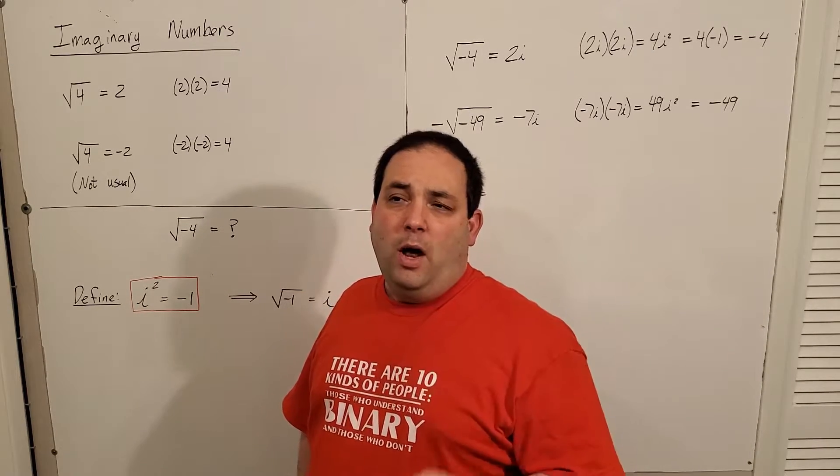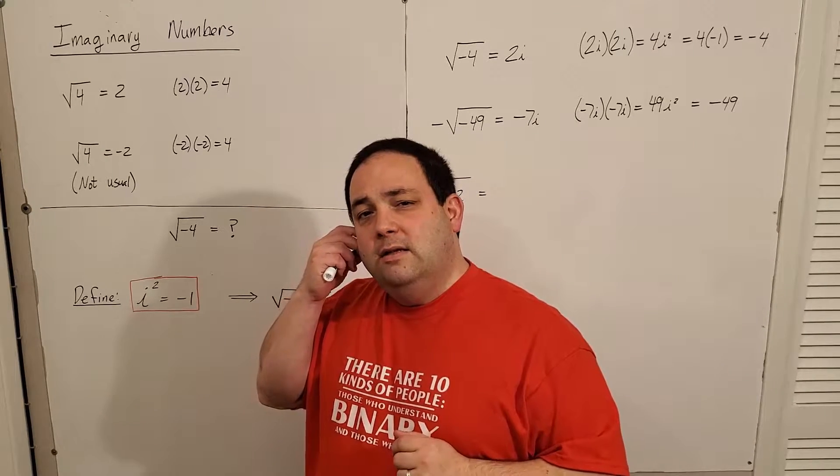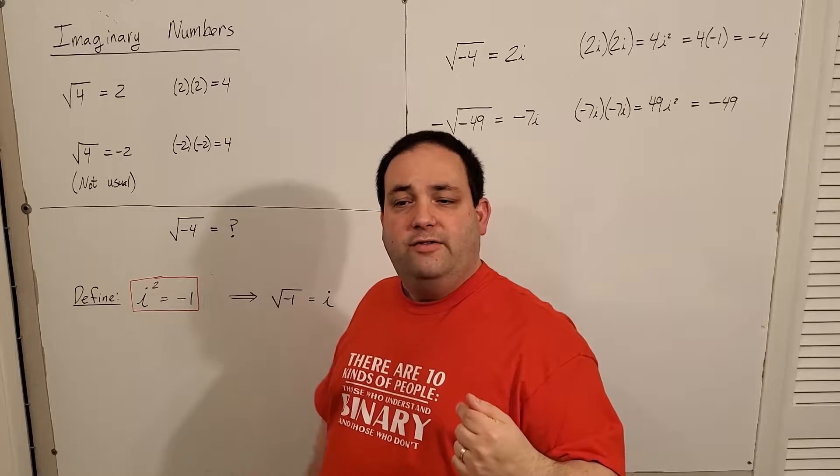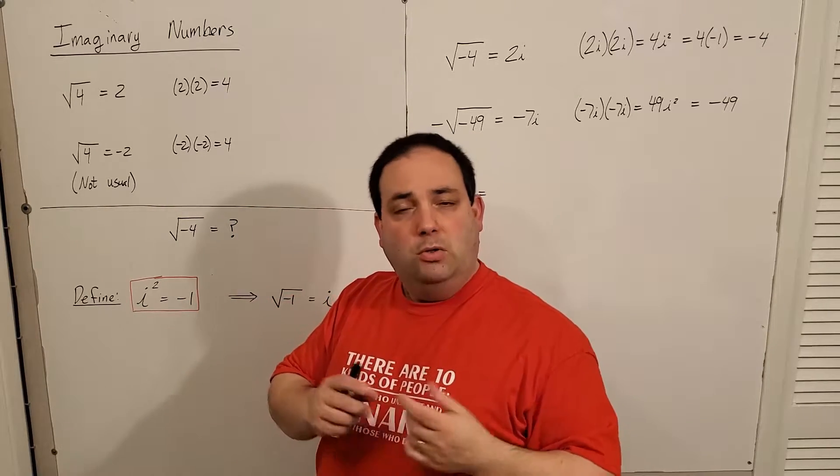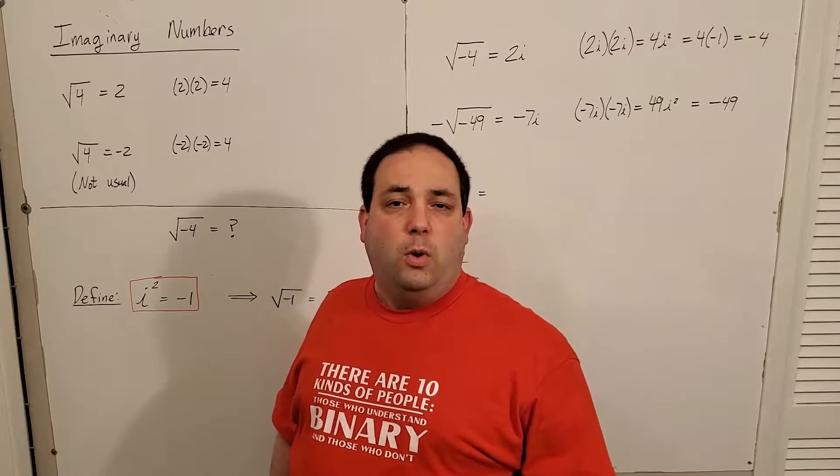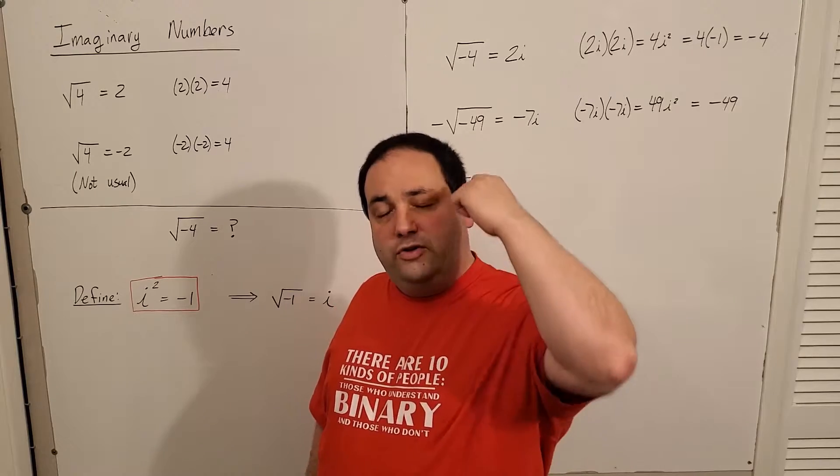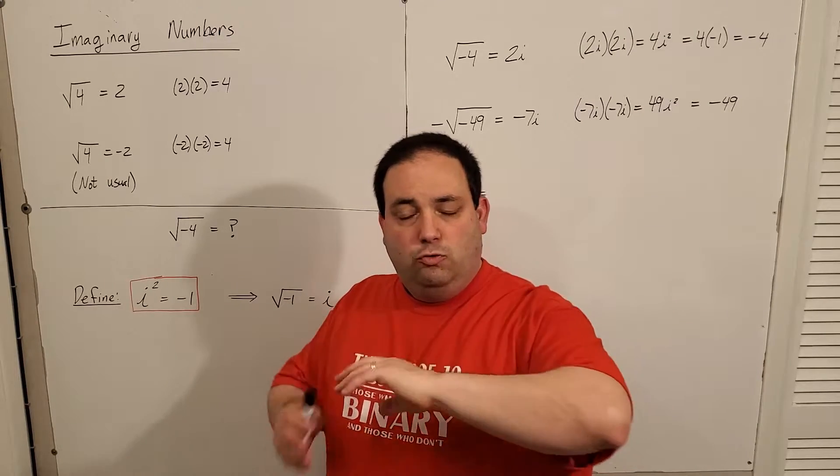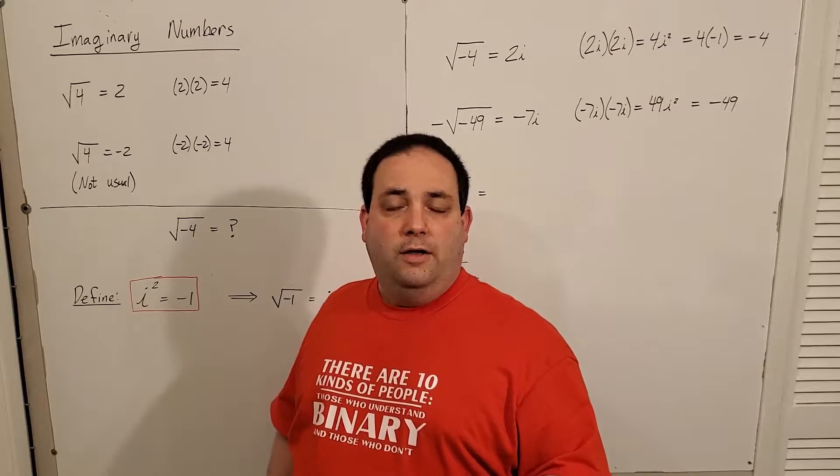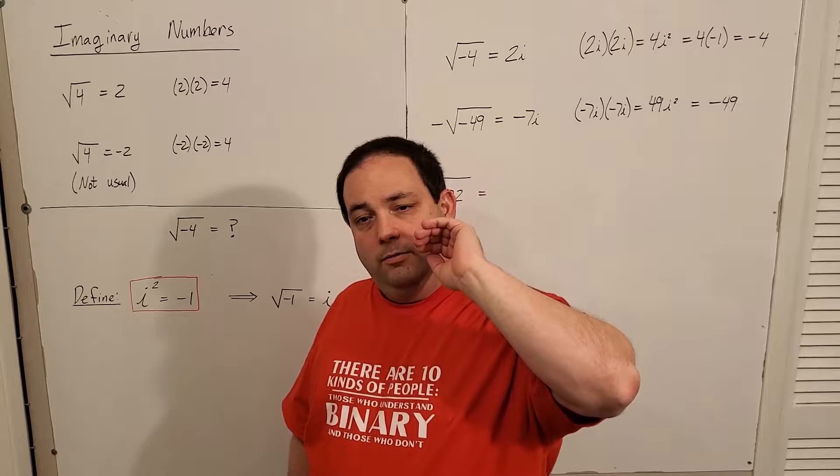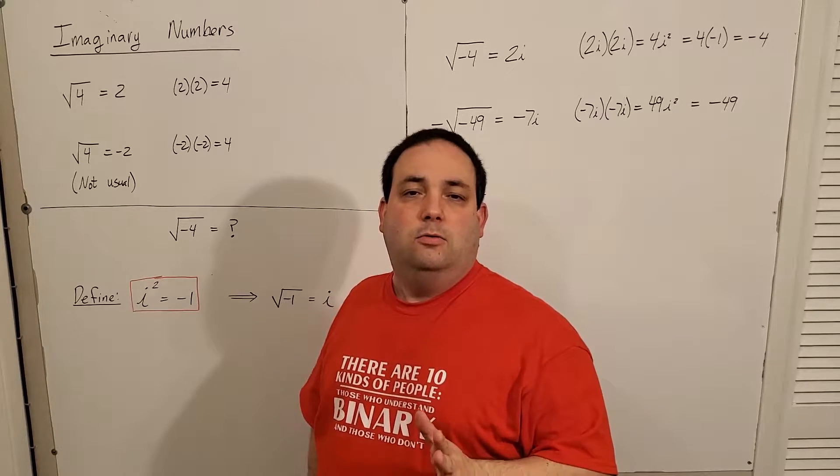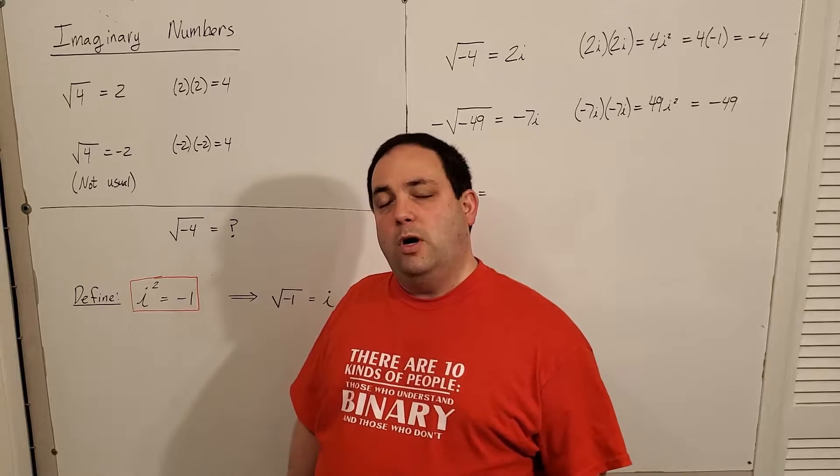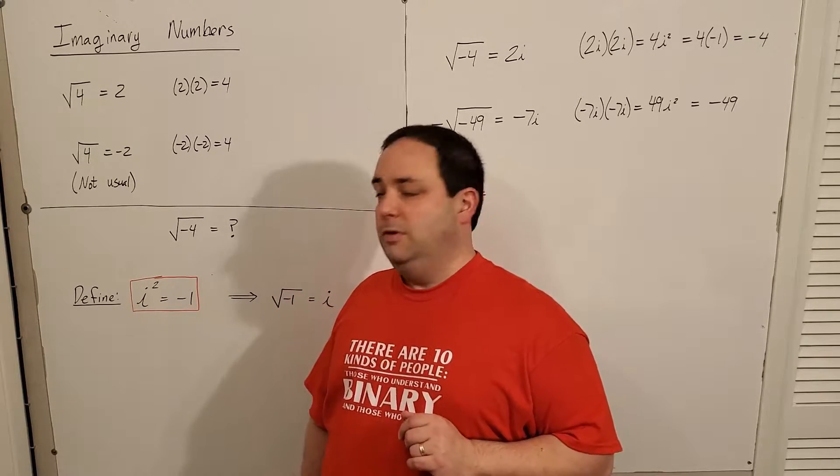So when I have a square root of a negative number, there's no number in the real number system on the number line that when you square it, you'll get a negative. So what turns out to be the thing that makes the most sense is for us to just completely create an entire set of brand new numbers, and they're called imaginary numbers. They're almost exactly identical to our normal number system. The only difference is they're tagged with this i.